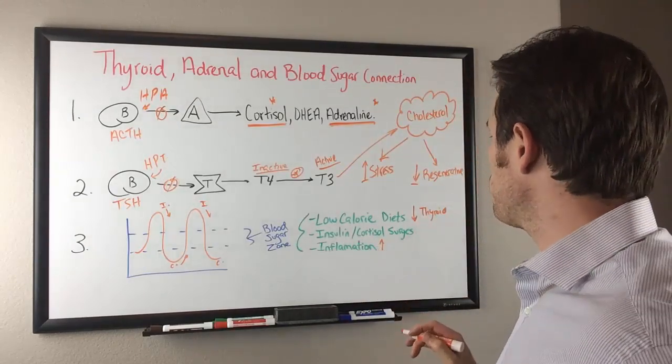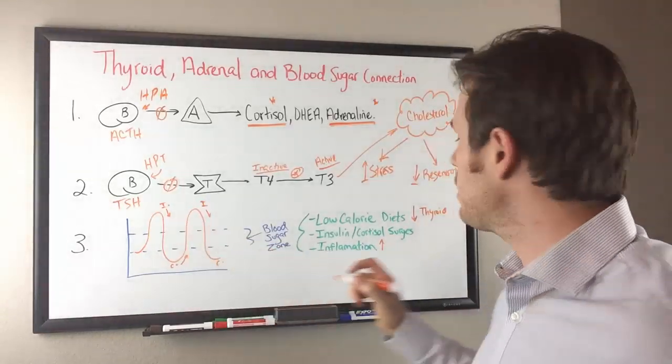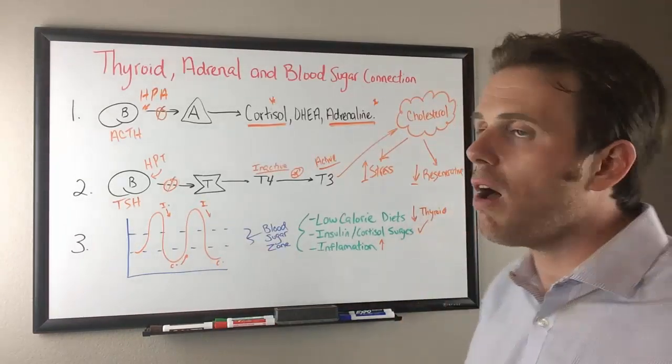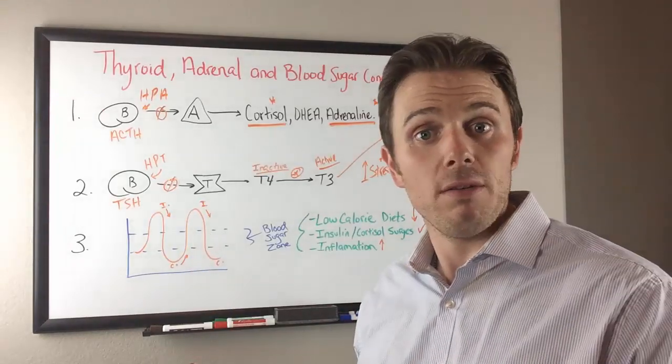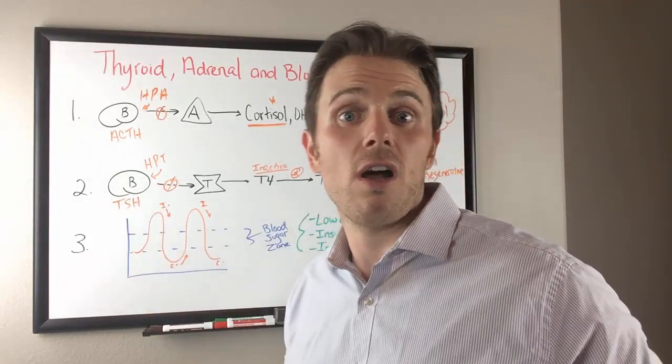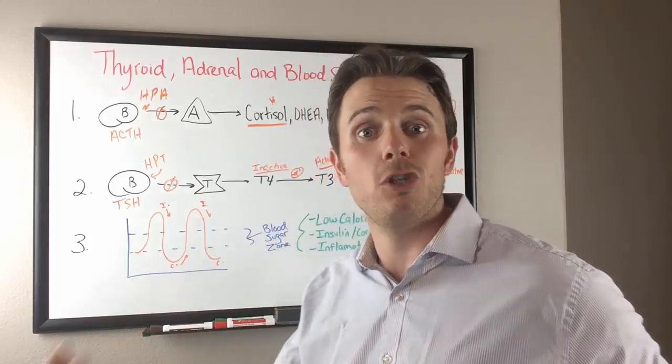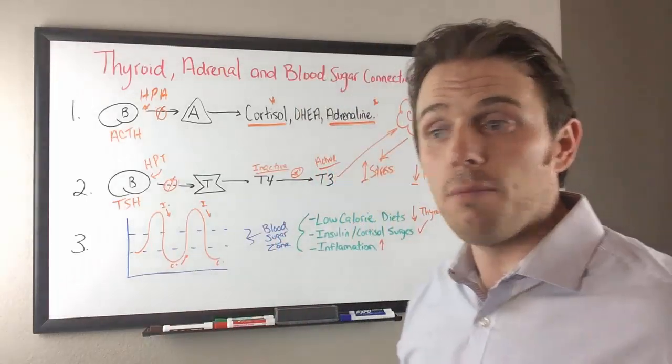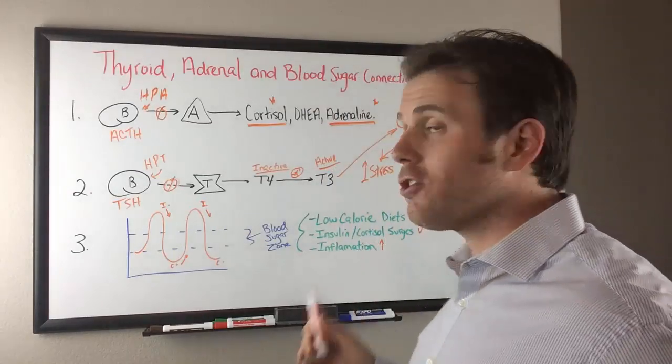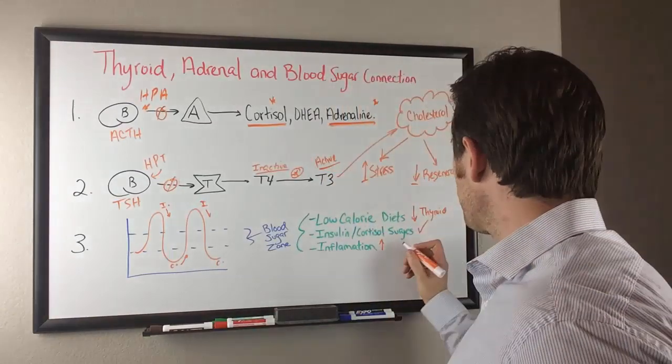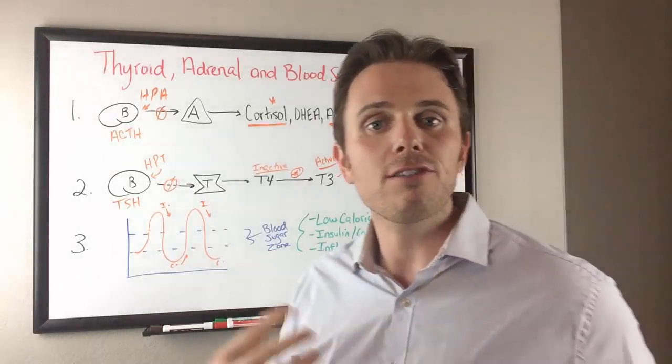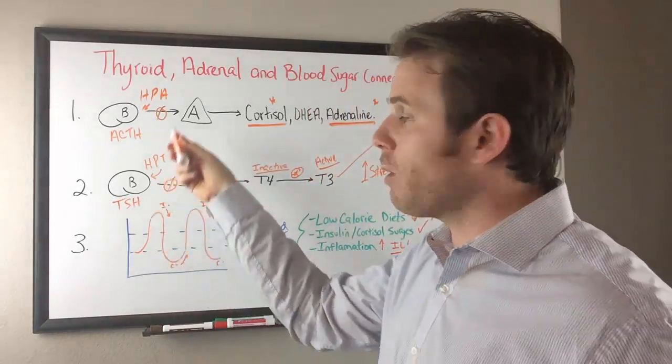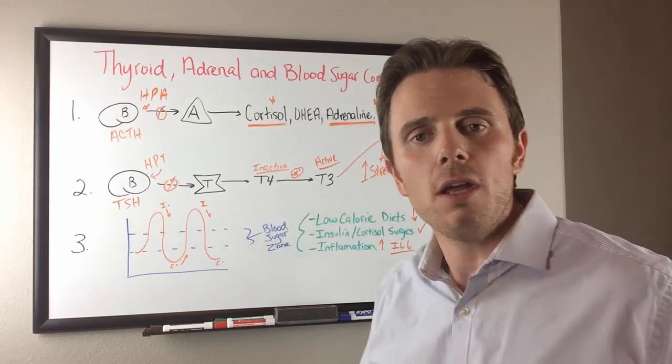We have more of the insulin cortisol surges here, which make the problem worse. And then we have excessive inflammation because in women, we're going to see the increased surge of testosterone. You may see more body hair, PCOS, infertility, and or acne as well. And then we're also going to have a surge of interleukin-6. Interleukin-6 is an inflammatory cytokine that gets stimulated when our blood sugar goes up and down.